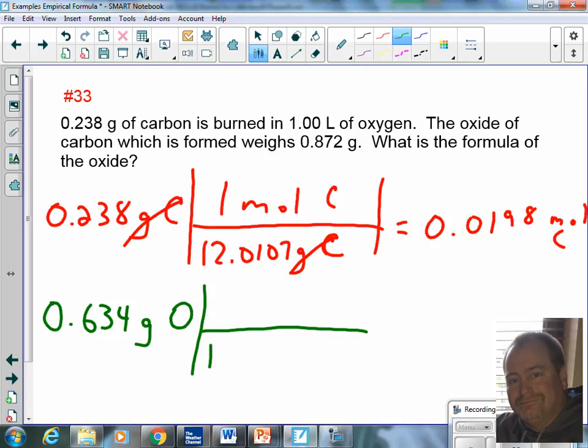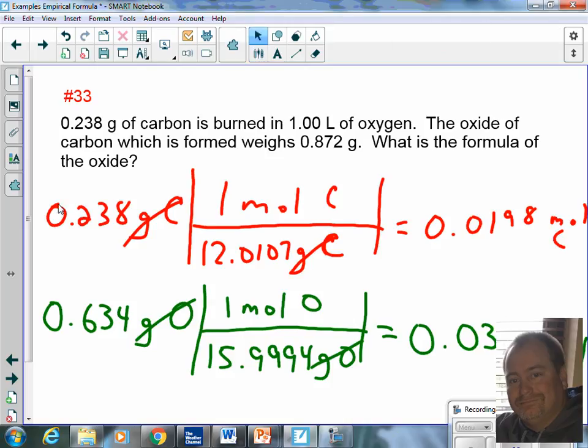Same for oxygen. One mole of oxygen has a mass of 15.9994 grams. Grams of oxygen cancel. When I do my calculation, I come up with 0.0396 moles of oxygen.